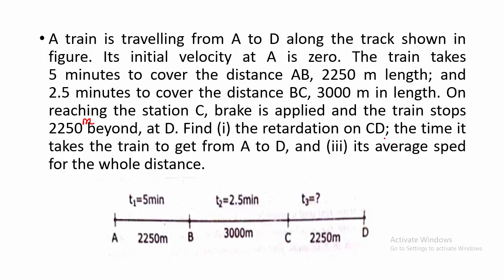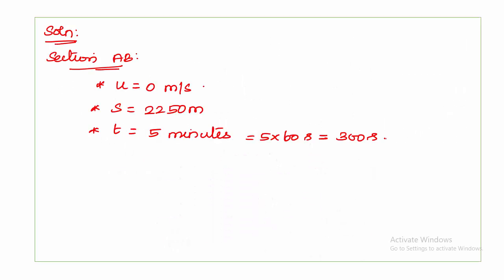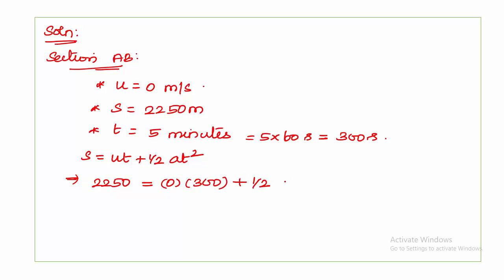Using the formula S = Ut + ½At², where S is the distance, U is the initial velocity, and T is the time — all are known. The one and only unknown in this equation is acceleration A. Substituting: 2250 = 0×300 + ½ × A × 300², we get acceleration A = 0.05 meters per second squared.